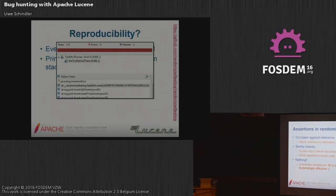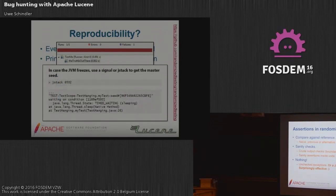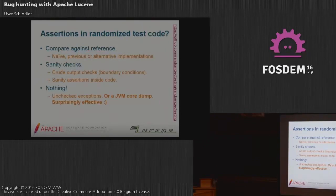How do you do assertions in randomized test code? You can compare against a reference — if you have a different algorithm doing the same thing, you just compare results. You can check for boundary conditions. And finally, you can do nothing and just run your tests and wait until your JVM crashes. That's what we're doing in the testing of OpenJDK early access builds at the moment.